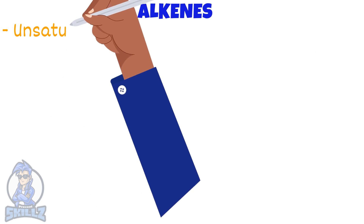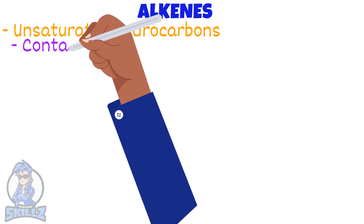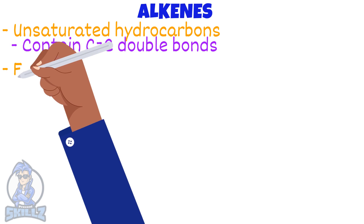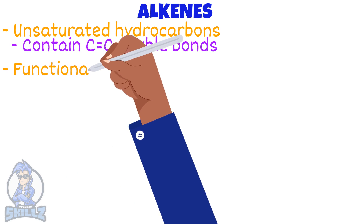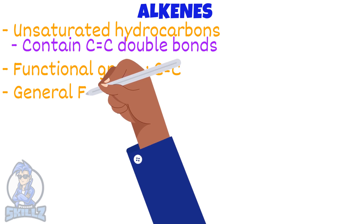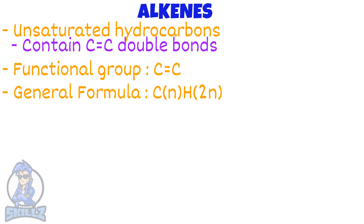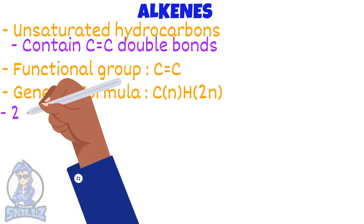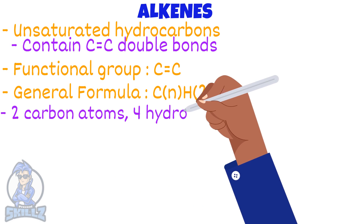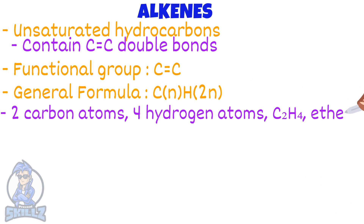Alkenes are unsaturated hydrocarbons. This means they do contain carbon-carbon double bonds. The functional group for alkenes would be carbon-carbon double bonds. Alkenes' general formula is CnH2n, which means if there were two carbon atoms in a molecule, there would be four hydrogen atoms — C2H4 — which is ethene.